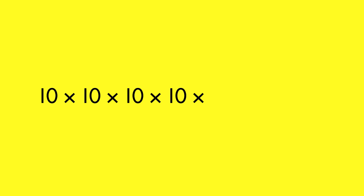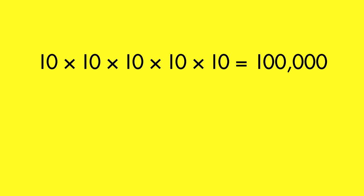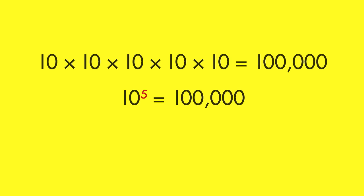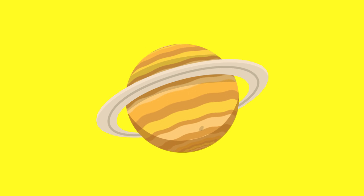Multiplying ten a number of times can take a long time. An easier way is to use an exponent to show that a number should be multiplied by itself that many times. Read a number with an exponent like this: ten to the fifth power. You can use powers of ten in equations.